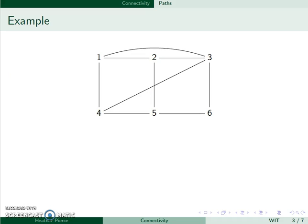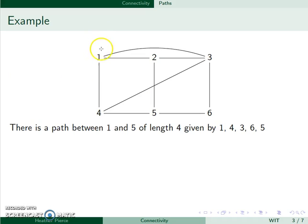For example, here's a graph. There is a path between 1 and 5 of length 4. We can go from 1 to 4, from 4 to 3, 3 to 6, and 6 to 5. We say this is length 4 because it has 4 edges.